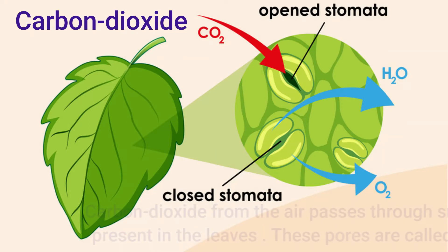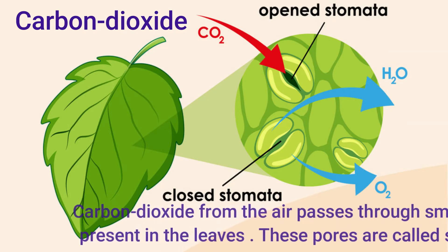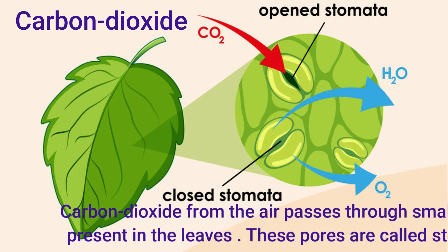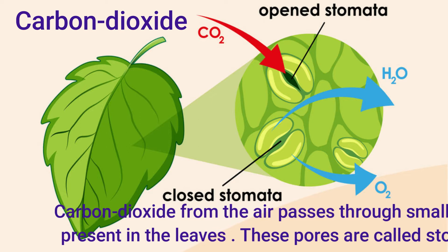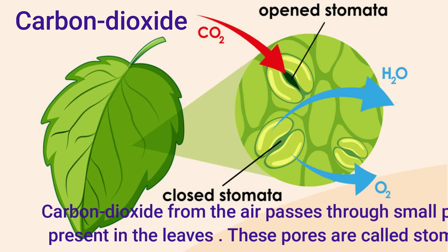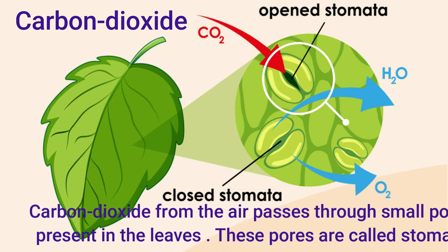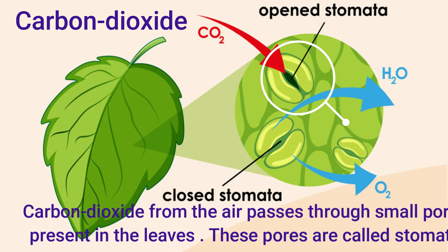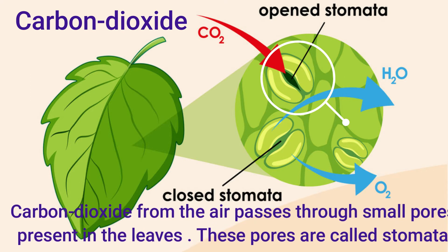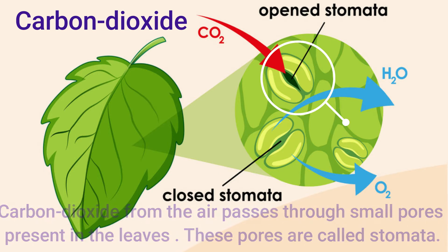Carbon dioxide: carbon dioxide from the air passes through small pores present in the leaf. These pores are called stomata. The stomata you see here — with the help of stomata, carbon dioxide enters the plant.